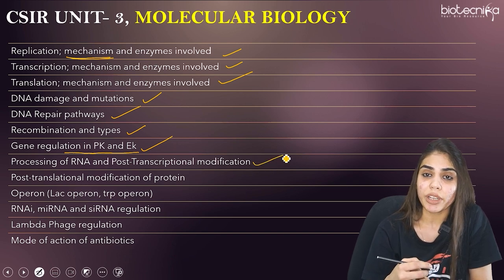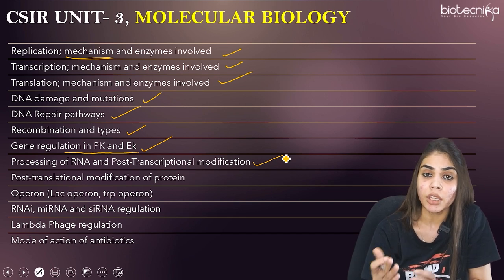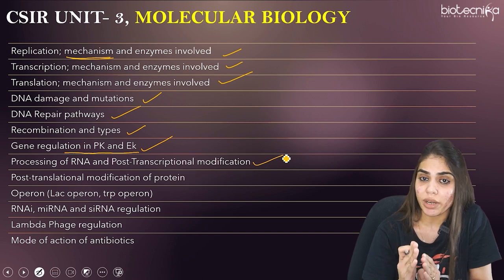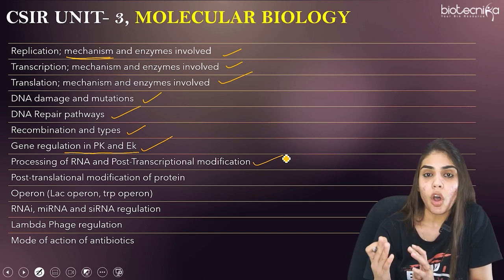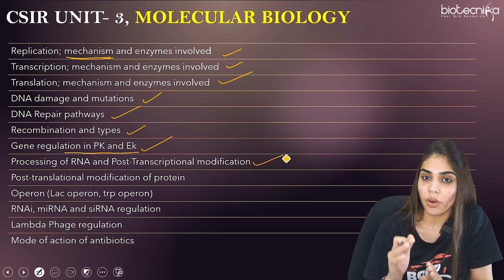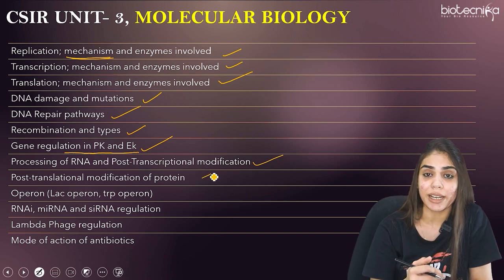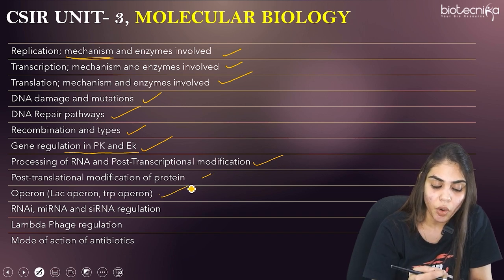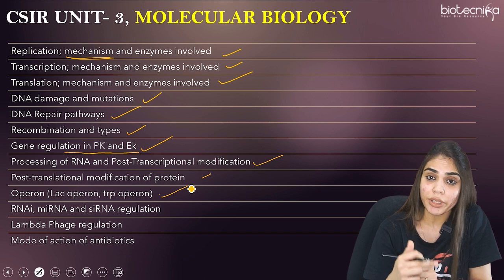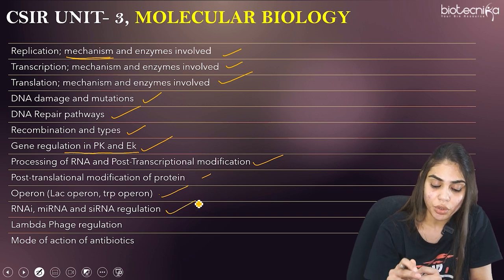Post-translational modification of proteins is also important. There are many types — acetylation, methylation, and others. Know the importance of each: whether acetylation activates transcription or methylation switches off transcription. Also cover the lac operon and trp operon — their positive and negative regulation. Learn about RNA interference: how it works, and the difference between miRNA and siRNA.